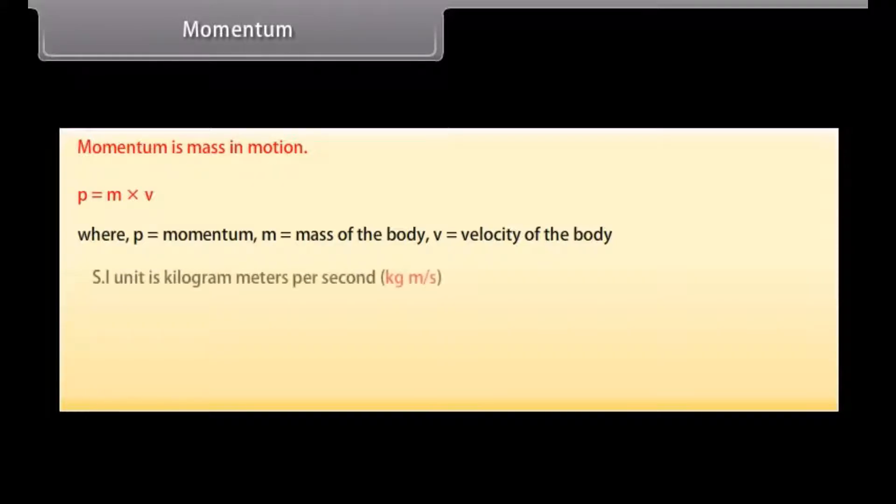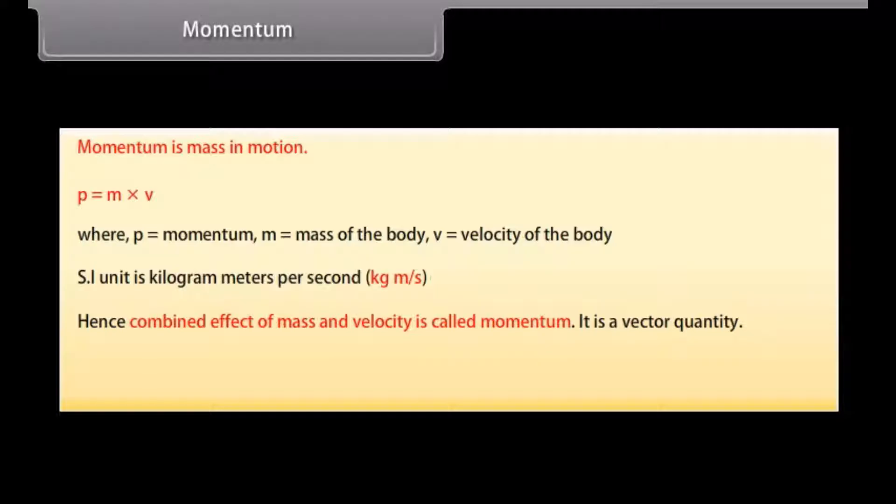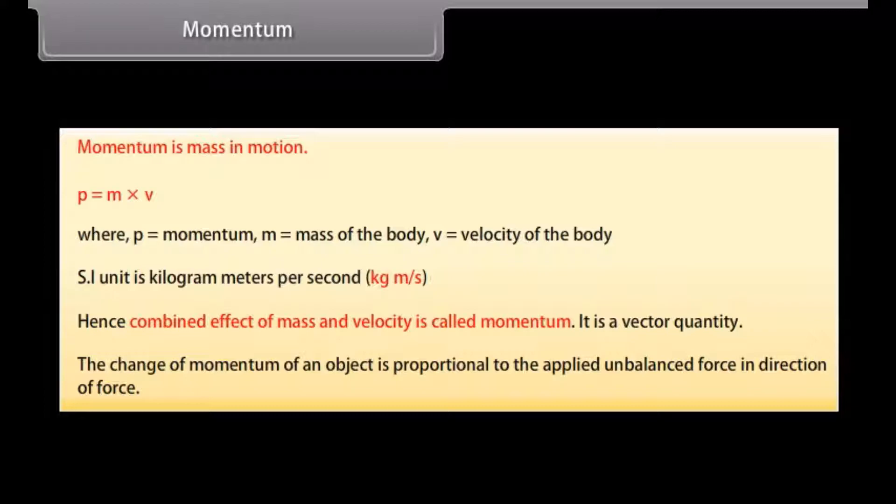Momentum is mass in motion. P is equal to M into V, where P is equal to momentum, M is equal to mass of the body, V is equal to velocity of the body. SI unit is kilogram meters per second. Hence combined effect of mass and velocity is called momentum. It is a vector quantity. The change of momentum of an object is proportional to the applied unbalanced force in direction of force.